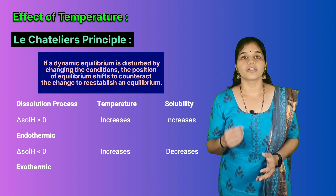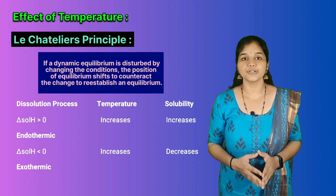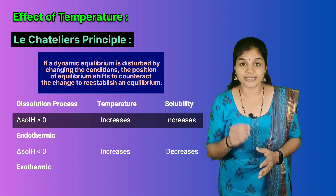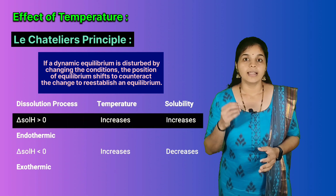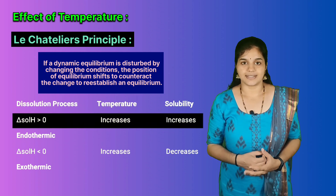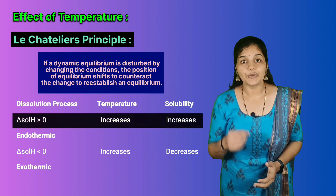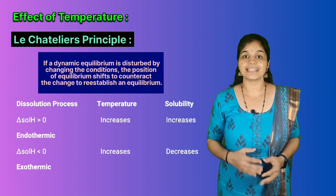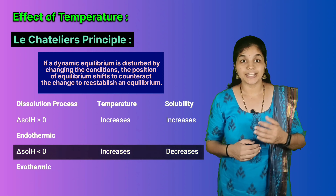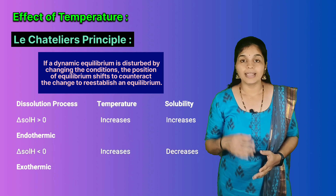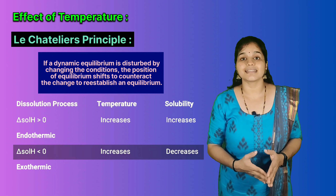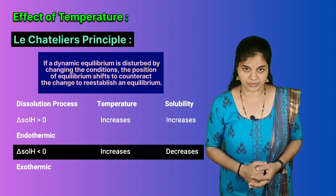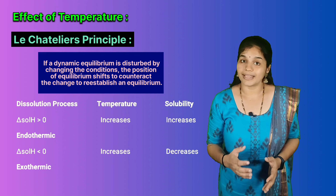In general, for a saturated solution, if the dissolution process is endothermic — that is, if heat is absorbed by the system during dissolution — ΔH of solution is greater than zero. In this case, solubility increases with increase in temperature. If the dissolution process is exothermic — that is, if heat is given out during dissolution — ΔH of solution is less than zero, and solubility decreases with increase in temperature. This was confirmed experimentally as well.